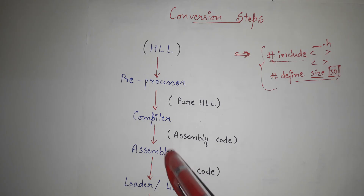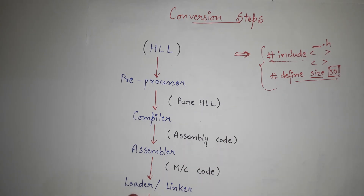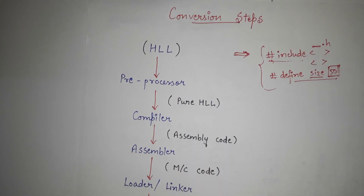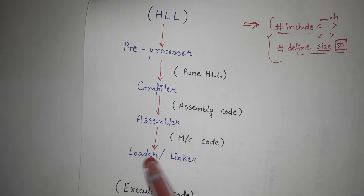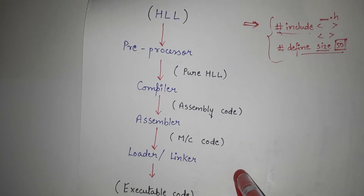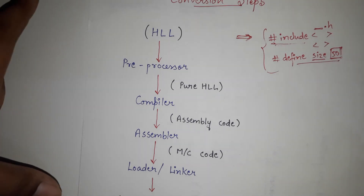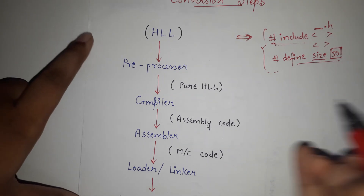This assembly code then goes into the assembler. The assembler converts the assembly code into machine code. Then we have the linker and loader, which take this machine code and produce executable code. Finally, this linker and loader give us the executable code that can be easily executed by machines or computers.